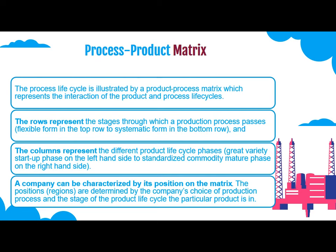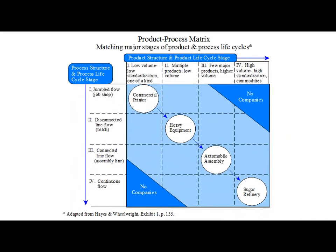A company can be characterized by its position on the matrix. These positions, called regions, are determined by the company's choice of production process and the stage on the product lifecycle that the particular product is in. This is the typical figure of the product-process matrix matching major stages of product and process lifecycle.